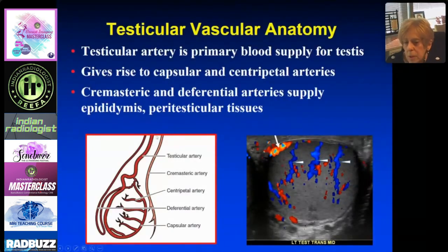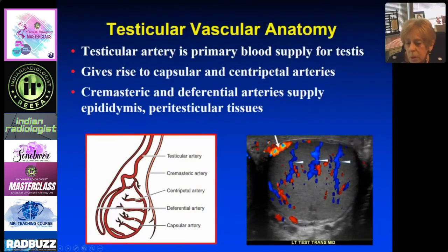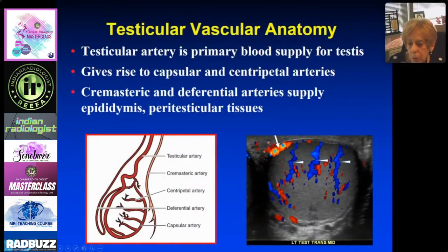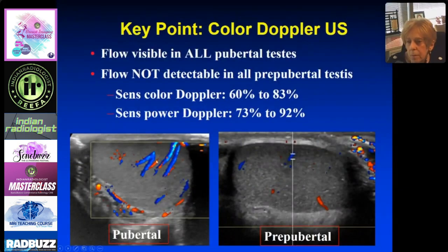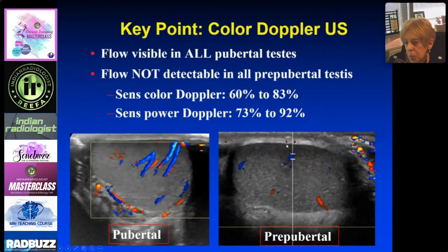Testicular vascular anatomy is the key point for Doppler and making the diagnosis of torsion. The testicular artery comes off the aorta as the primary blood supply and gives rise to capsular arteries and centripetal arteries — those are the ones that go into the testis and the ones you want to see. There are cremasteric and deferential arteries supplying the epididymis and peritesticular tissues. When doing Doppler, focus on the branches off the aorta and the centripetal arteries. These vessels are seen in all pubertal testes; in pre-pubertal testes you may see them only up to 83% of the time with color Doppler, slightly more with power Doppler.